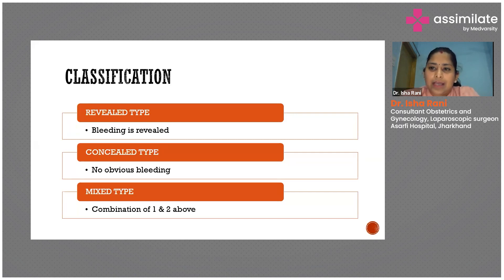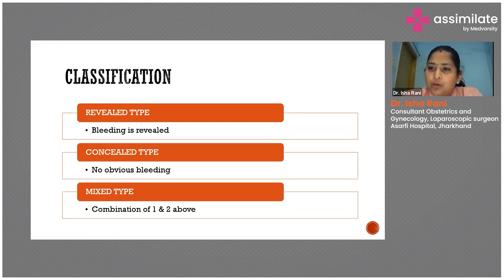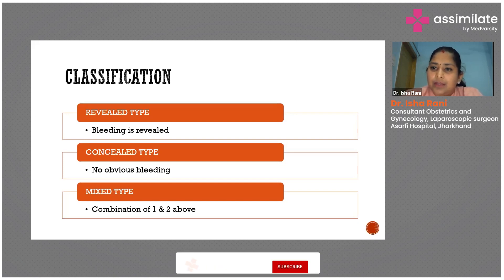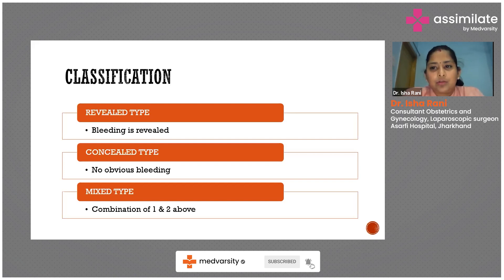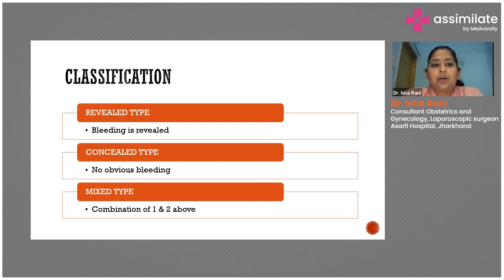In the mixed type, there is a combination of both — there will be bleeding per vaginum, but the amount of bleeding will not correspond to the degree of clinical deterioration. Even if there is a severe grade of abruption, the bleeding might be just minimal. We have to take into consideration that there could be any of these three types of abruption.